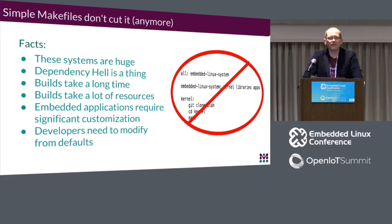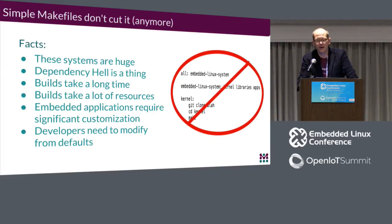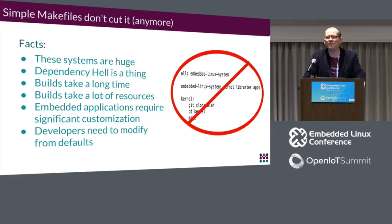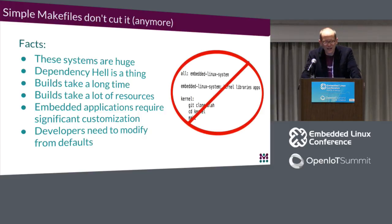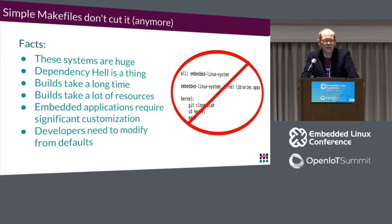Embedded Linux systems are very large. There are typically anywhere from hundreds of thousands of packages you'll need to download, configure, build, and get running. Dependency hell really is a thing. Getting the right combination of packages and versions for any particular configuration can be tricky. I once worked on a project where the entire build system was a 10,000-line makefile and a 15,000-line shell script — those things don't scale well. Working with simple makefiles doesn't cut it anymore, and there are good options to help without dealing with all that complexity yourself.